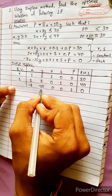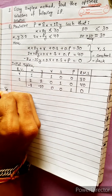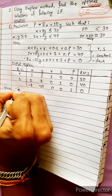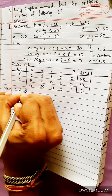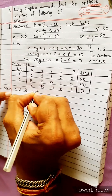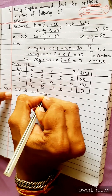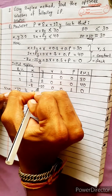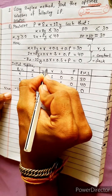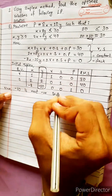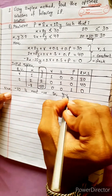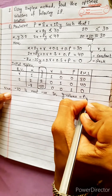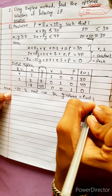Since minus 10 is the most negative, minus 10 is the pivot column. This is the y column, so y column is the entering variable column.